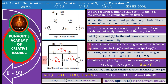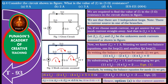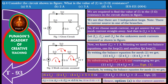Now, we know I1 equals 1 ampere, meaning we need two balance equations — one for loop 2 and another for loop 3. By writing the balance equation for loop 2, we get 11 into I2 minus 2 into I1 minus 4 into I3 equals 0. By substituting I1 equals 1 ampere and rearranging, we get 11 into I2 minus 4 into I3 equals 2.